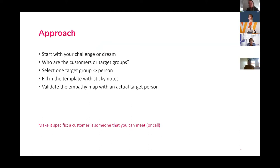We usually start from the challenge or the dream, and then you can have a look at who are the customer groups or target groups. You select one, you select a person, and then for that person you can fill in the empathy map as a starting point. It's very important to validate that empathy map with the actual target person, because you can brainstorm a lot but you can make many assumptions — in real life this might be different. Also make it as specific as possible.